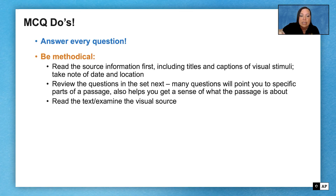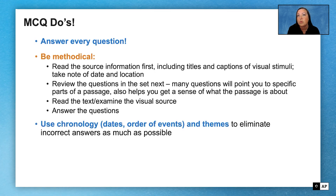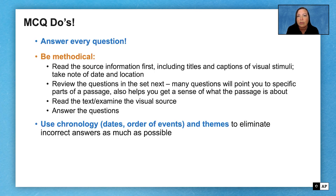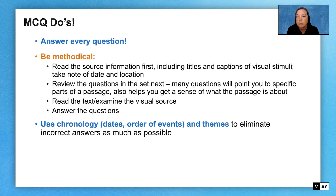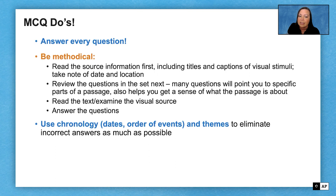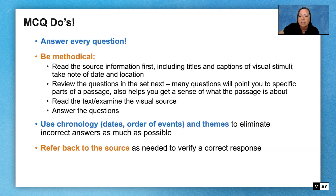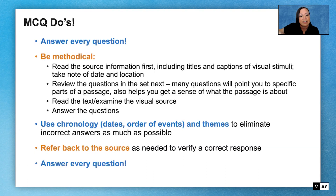Once you read the passage or examine the text, you can go about answering all the questions. To eliminate wrong answer choices, think about chronology and theme. If something seems wildly out of the time period, eliminate those choices right away. Also, if something isn't the right theme — like the question asks about a cultural topic but you see a political answer — eliminate that. Always refer back to the source as needed, and finally, answer every question. Don't leave anything blank.